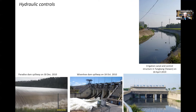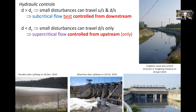Let us talk about hydraulic controls. In a subcritical flow, small disturbances can travel both upstream and downstream, and such flow is best controlled from downstream — for an irrigation canal, we typically place a control gate at the downstream end. When we have supercritical flow, small disturbances can propagate only downstream, so supercritical flow can only be controlled from upstream, such as by placing a gate at the upstream end or using critical flow condition at a spillway crest.